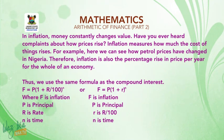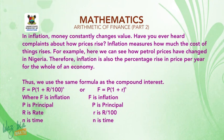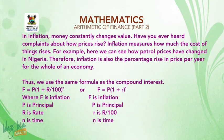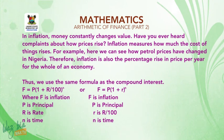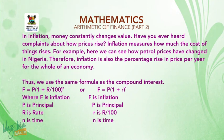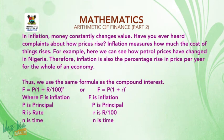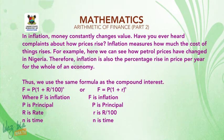Thus, we use the same formula as compound interest, where F = P(1 + R/100)^N, where F is inflation value, P is principal, R is rate, and N is time. Alternatively, F = P(1 + r)^n, where small r = R/100 and small n is time.